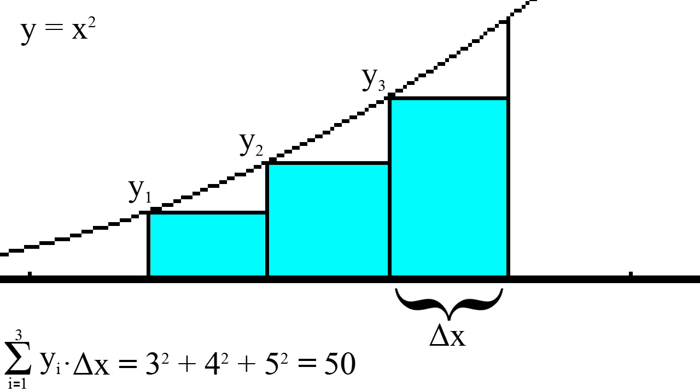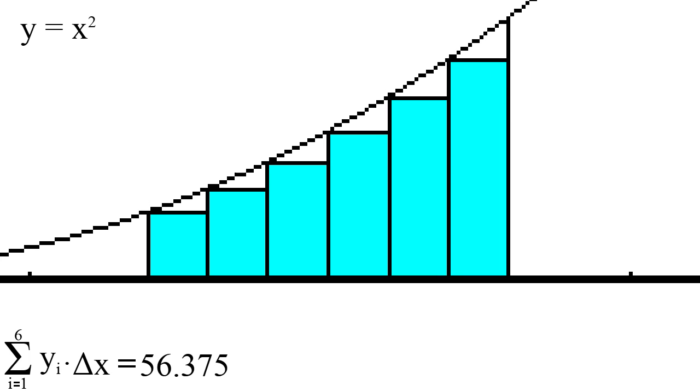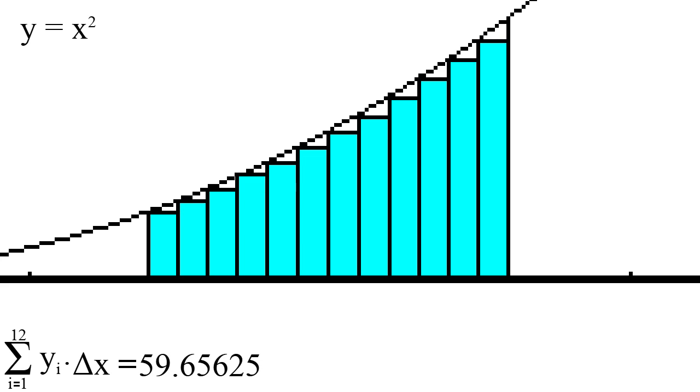One way of obtaining a more accurate answer is to halve the width of the rectangles, which gives us six of them. This now gives us a more accurate answer of 56.375. If the width was halved again, giving us twelve rectangles, the answer is 59.65625, which is even closer.